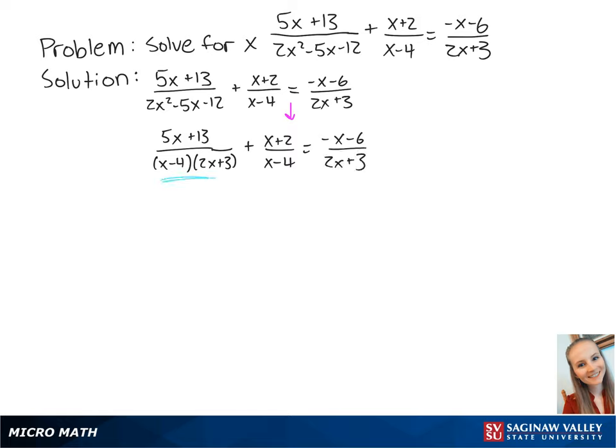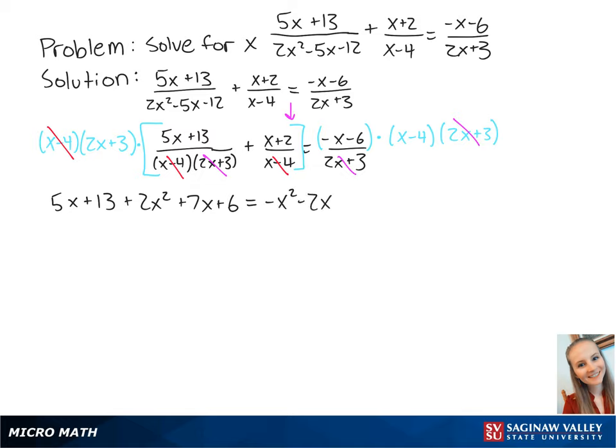To remove the fractions, we want to multiply both sides by x minus 4 and 2x plus 3. x minus 4 cancels out on the left side twice and 2x plus 3 cancels out on the left side once and on the right side once. Now we have 5x plus 13 plus 2x squared plus 7x plus 6 equals negative x squared minus 2x plus 24.